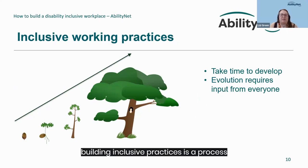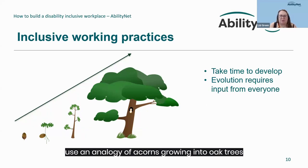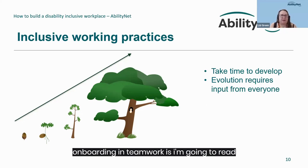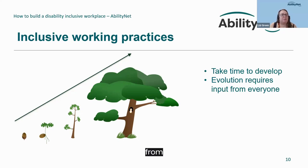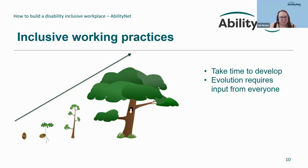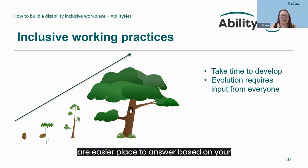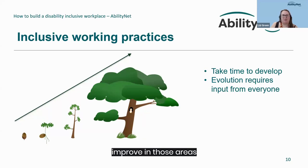Building inclusive practices is a process and all organisations will be at one stage or another. To demonstrate the stages we use an analogy of acorns growing into oak trees. For recruitment, onboarding and teamwork, I'm going to read out some statements from acorn to oak tree against each section, then invite you to use the Slido to say where you think you might be in your organisation or team, and then we'll look at some tips for how to improve in those areas.